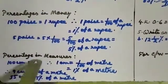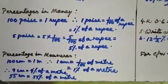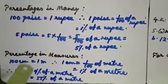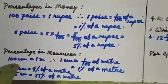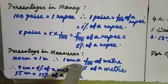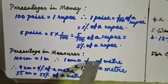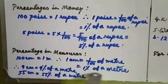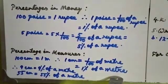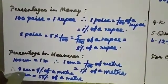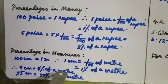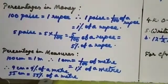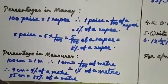Now percentage in measures. 100 centimeters is equal to 1 meter — that means 1 centimeter is equal to 1 by 100 of a meter, or 1 percent of a meter. Similarly, 9 centimeters is equal to 9 percent of a meter, and 55 centimeters is equal to 55 percent of a meter.